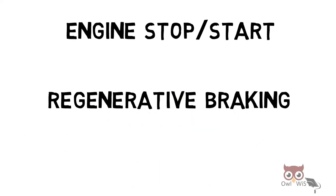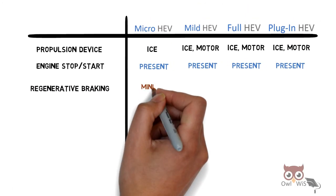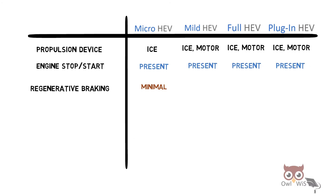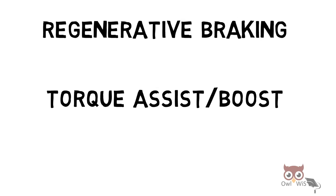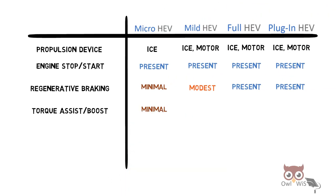Next, regenerative braking, which is minimal in micro, modest use in mild, and present fully in full and plug-in HEV. Next is torque assist or boost. It is minimal in micro, modest use in mild, and then present in full and plug-in completely.